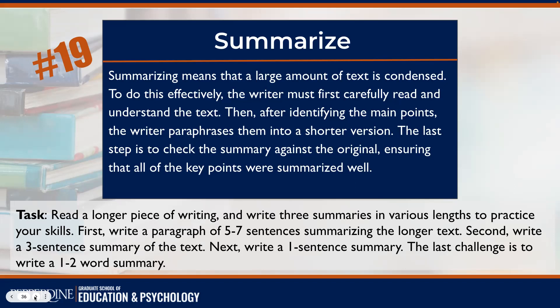The next skill is summarizing. Summarizing is something we've been doing since we were young — like writing book reports in third or fourth grade, condensing an entire book into a small amount of text. To do this effectively, we need to be true to the original writer's ideas: carefully read and understand the text, identify the key points, paraphrase them into a shorter version, and check the summary against the original to make sure everything was captured correctly.